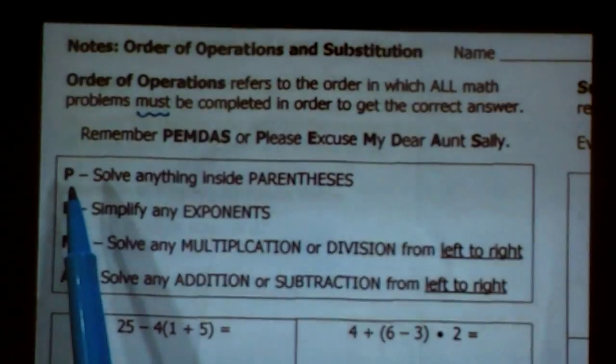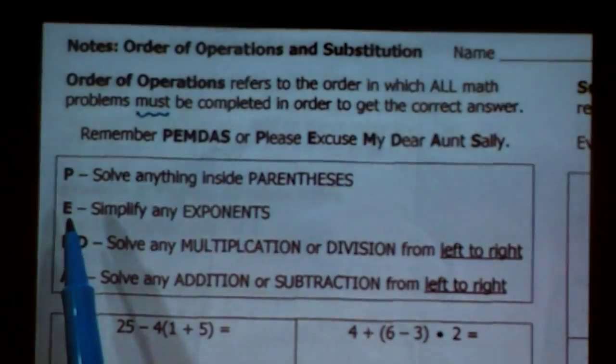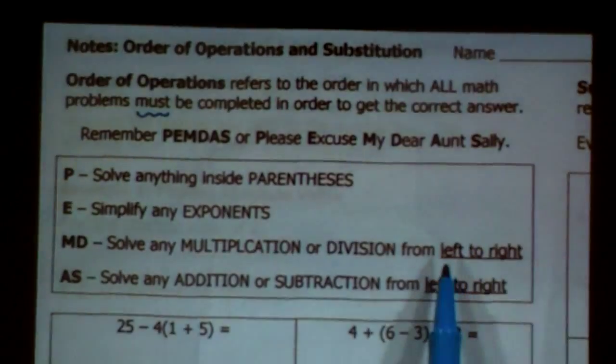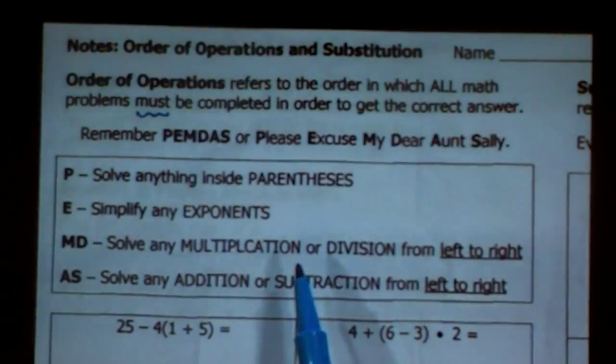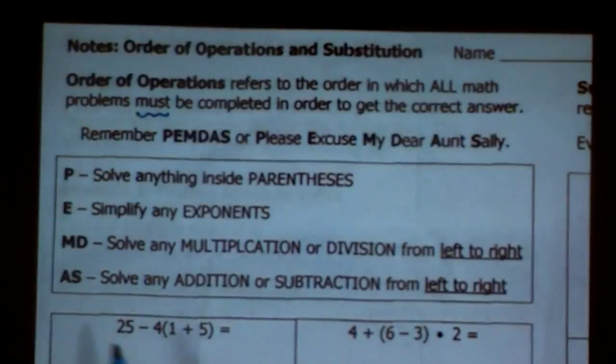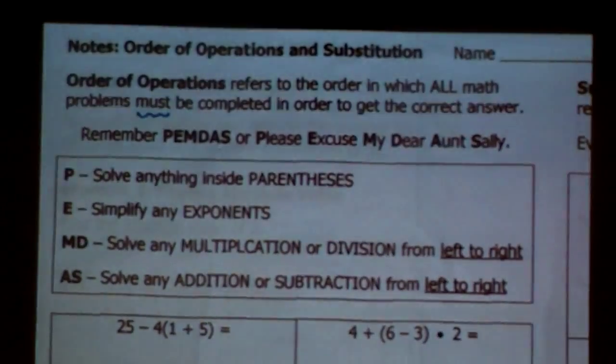Those always come first. Then if there's an exponent, those are little raised numbers, they're tiny. Then multiplication and division, always in order from left to right. So what that means is if you have a problem that just has multiplication and division, just go through it like you would read a sentence. And the same thing for addition and subtraction, just from left to right.